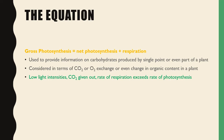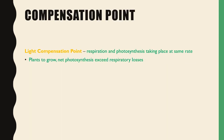This is used to provide information on carbohydrates produced by a single plant or even part of a plant. It's considered in terms of CO2 or O2 exchange, or even change in organic content in a plant. With low light intensity, CO2 will be given out and the rate of respiration will exceed the rate of photosynthesis. The light compensation point, which you see on a graph, is the crossover point between respiration and photosynthesis — this is where respiration and photosynthesis are taking place at the same rate.